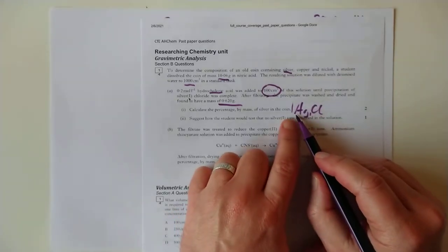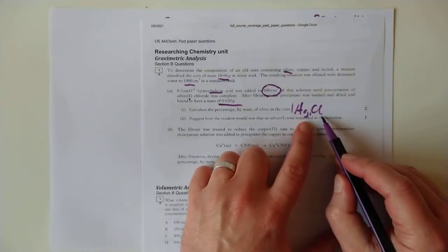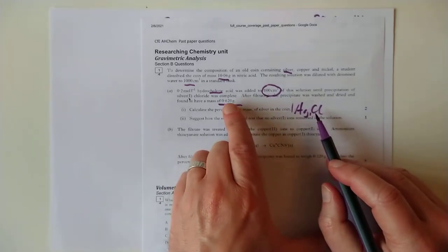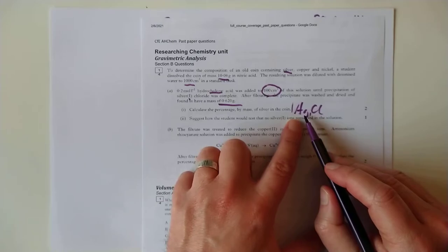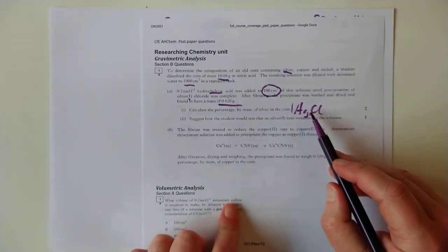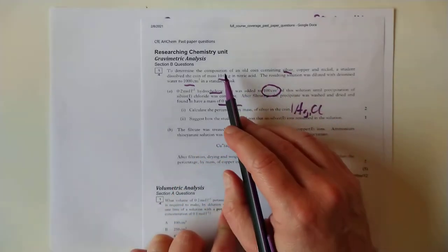So if we know the moles of silver chloride that we precipitated, and that's a mass, so we'll turn that into moles, you then know the moles of silver. And if you know the moles of silver, you can turn that back into a mass, and then compare it to the mass of the original coin.